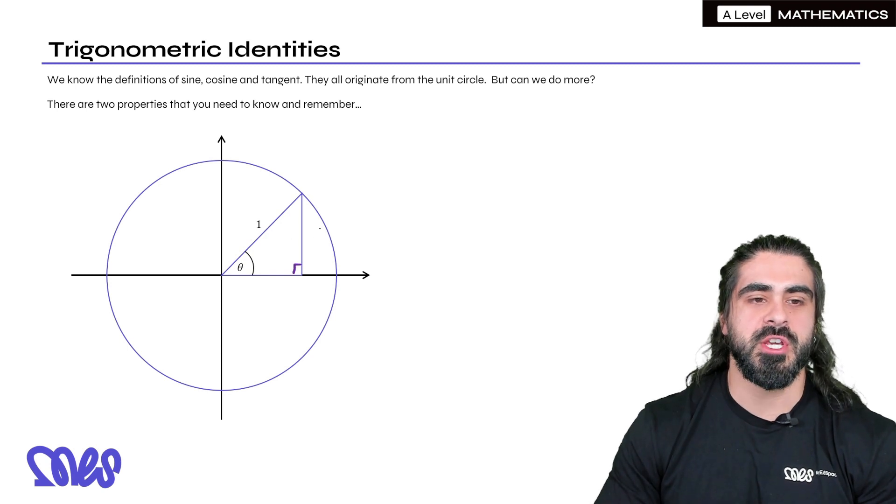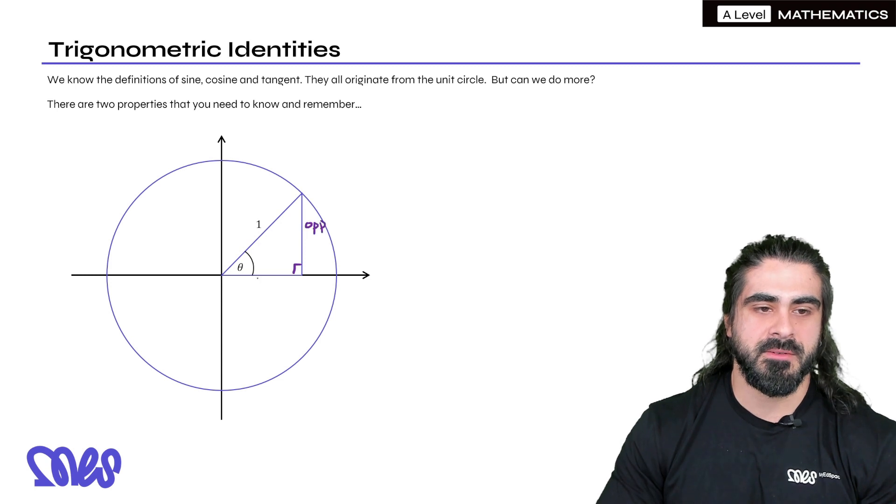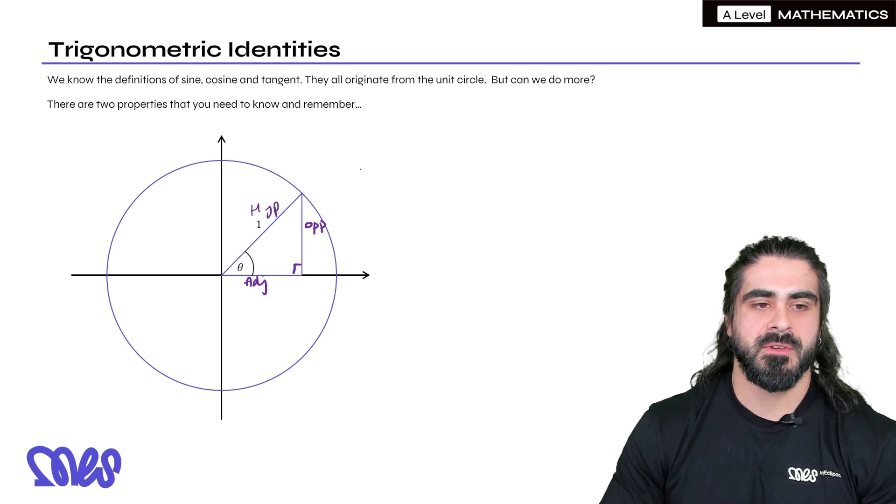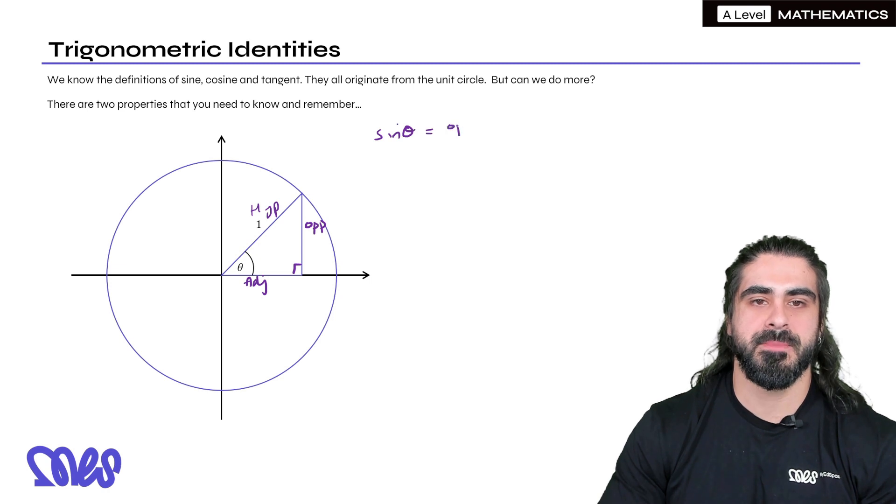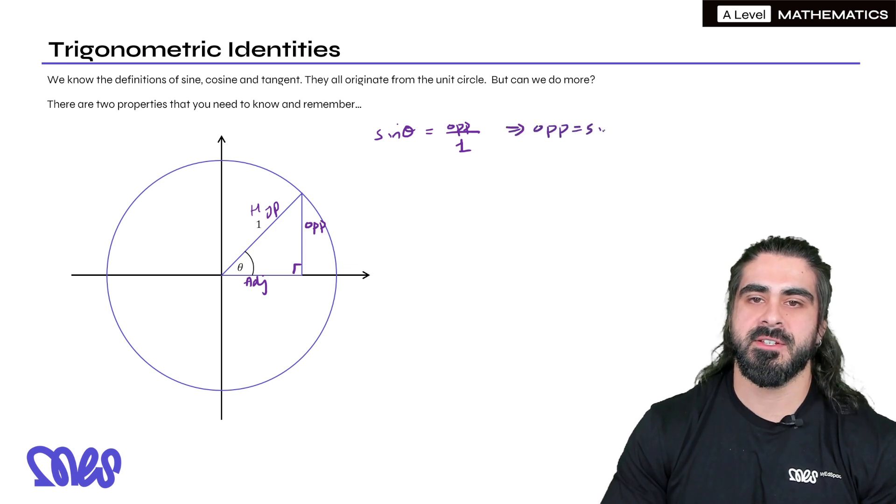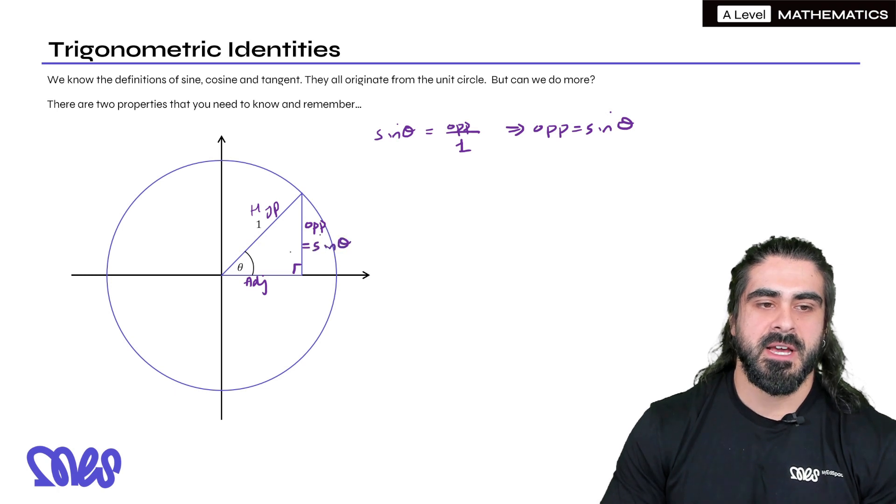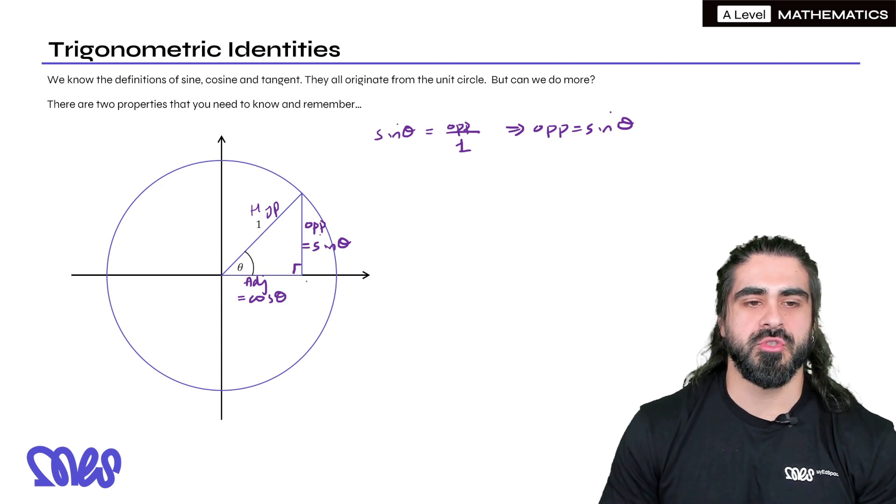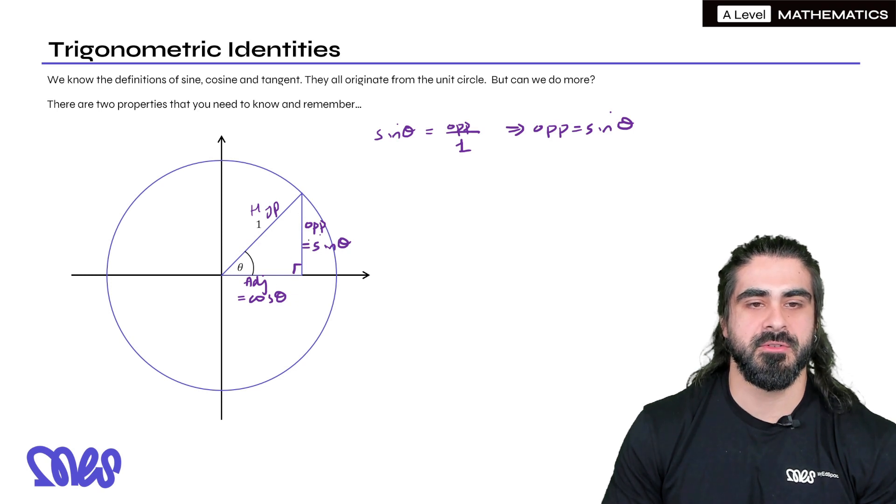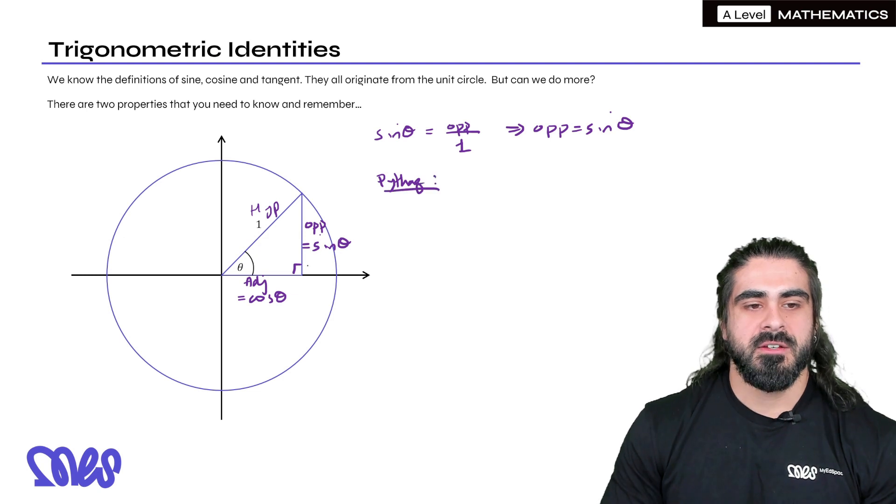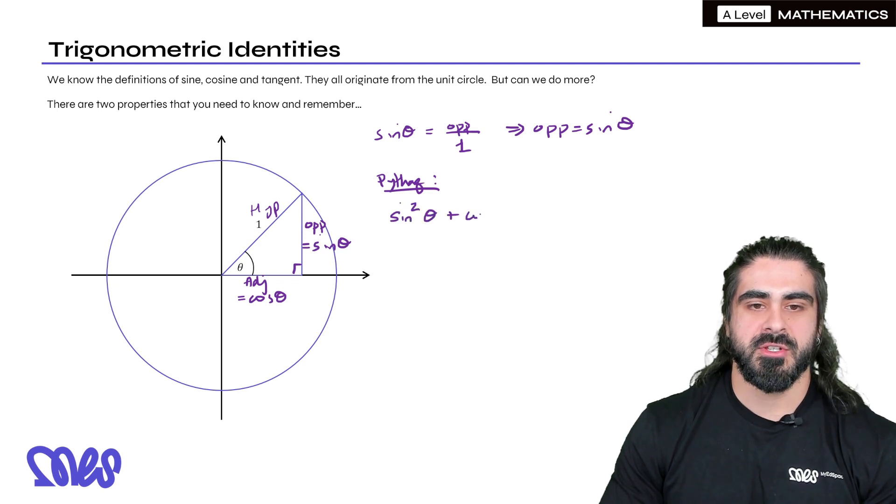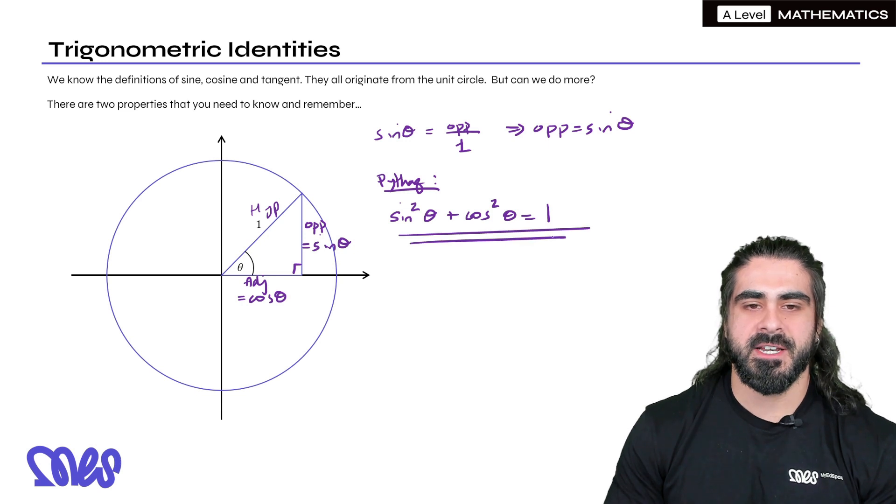We can work out in this triangle what the opposite length and the adjacent length are. So if I call this the opposite and the adjacent, then I can say, if I want to find the opposite length, I have the hypotenuse here. I can say sine of theta. We know sine measures the opposite over the hypotenuse, but the hypotenuse here is 1. That just tells us that the opposite length is sine theta. So this length here is sine theta. And by a similar argument we can find that the adjacent length is cos theta.